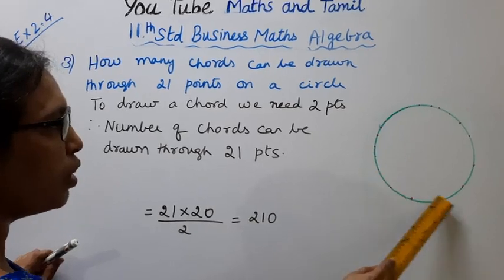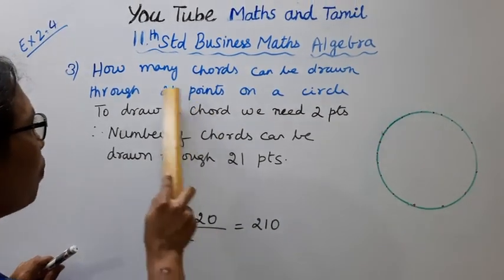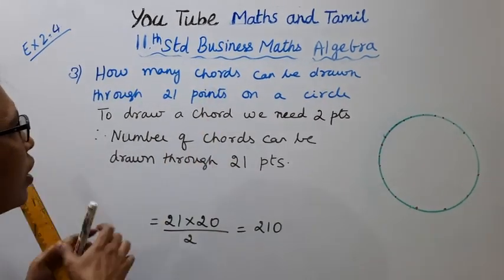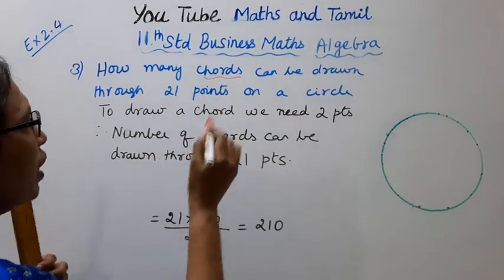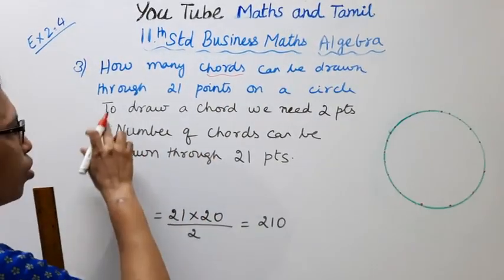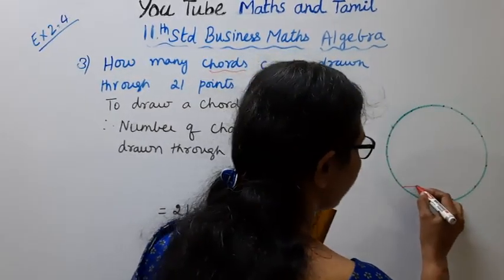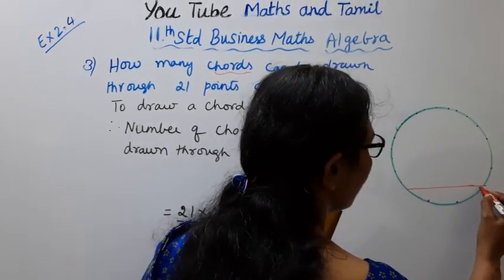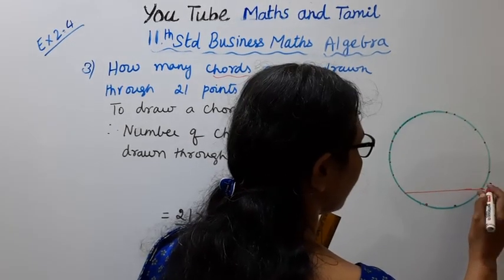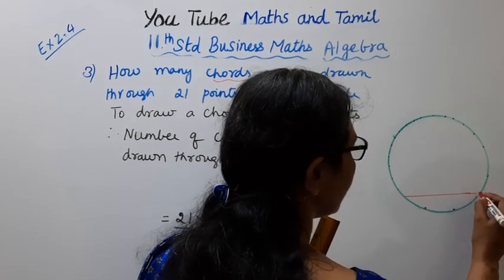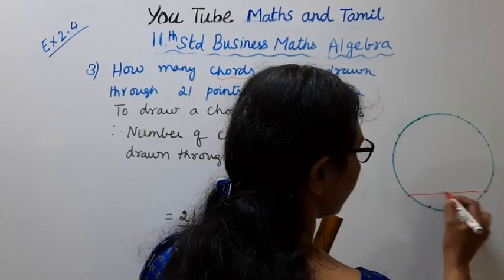We have 21 points on a circle - how many chords can be drawn? To draw a chord we need two points. To draw one chord we need two points - this is our chord.